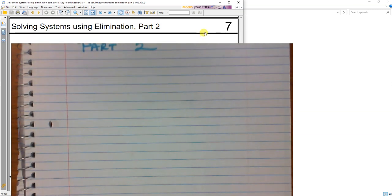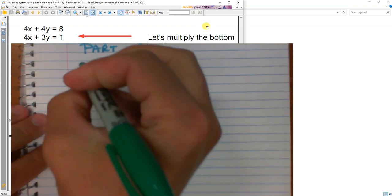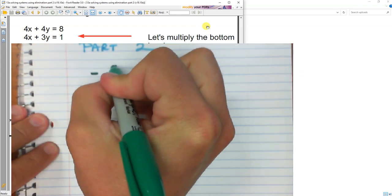And the first problem we're going to do is right here. I have negative 4x.